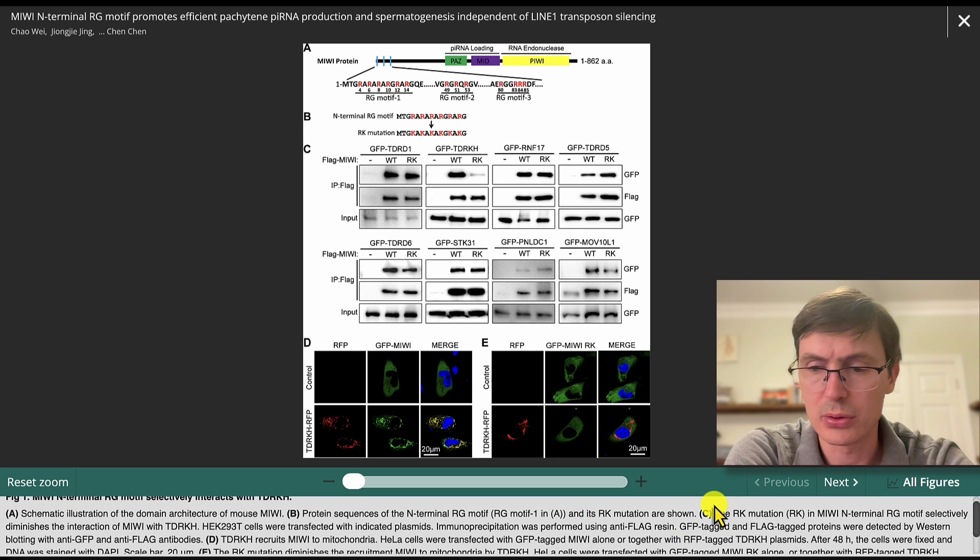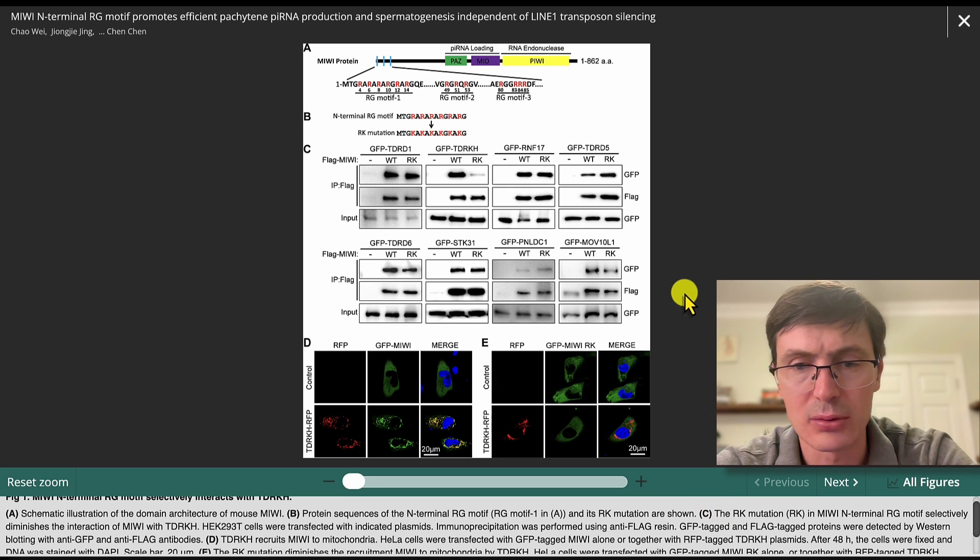However, the way I would have preferred to write this, I mean, this is completely fine, but something that I like to start, as I mentioned in the beginning, is to describe this experiment. So what is this experiment? This is an IP, an immunoprecipitation. So I would prefer to start saying immunoprecipitation of MIUI, wild type or RK with different known interaction partners. And that's the first sentence.